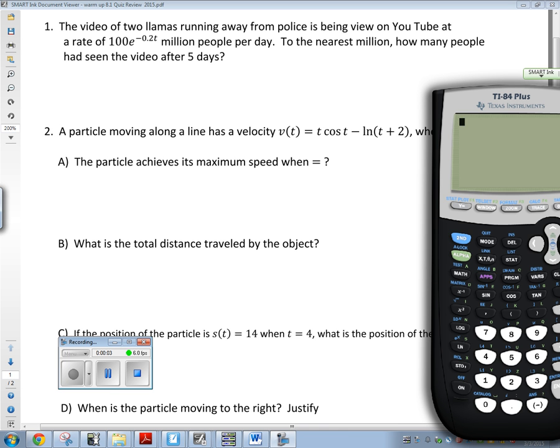Alright, so number one says the video of two llamas running away from the police is being viewed on YouTube at a rate of 100e^(-0.2t) million people per day. To the nearest million, how many people have seen the video after five days? You're given a rate, some sort of velocity, and you want to know how much. What do we do to go from a rate to how much? Integrate.